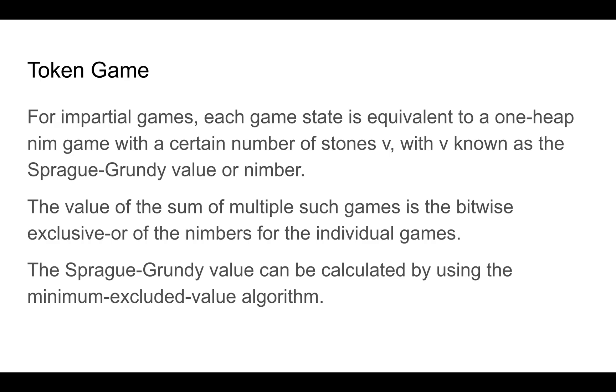Now, there's an assumption here that you know a little bit basic game theory. Sprague-Grundy values or nimbers in the equivalence of impartial games to nimbers states. Essentially, each game state can be shown to be equivalent to a one-heap nim game. The combination of games can be combined into an equivalent by taking the exclusive or of this Sprague-Grundy value or nimber. And the Sprague-Grundy value can be calculated by using a standard minimum excluded value algorithm.